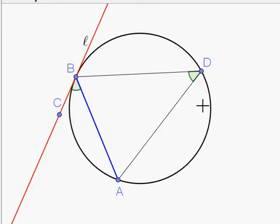Angle ADB is an inscribed angle that goes from A to B by way of the point D. D lies on the circle on the opposite side of the chord AB from the point C.